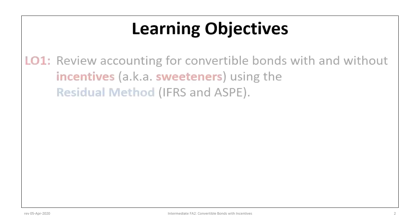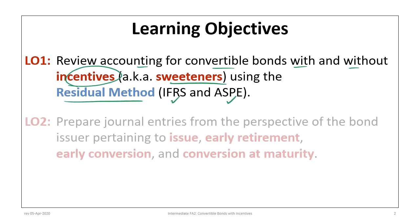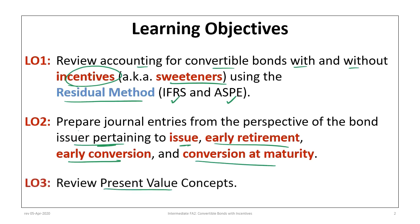This tutorial has three main learning objectives. The first is to review accounting for convertible bonds with and without incentives or sweeteners using the residual method, applicable under both IFRS and ASPE. Second, to prepare the journal entries from the perspective of the bond issuer as they relate to the issue, early retirement, early conversion, and conversion at maturity. And finally, to review present value concepts.